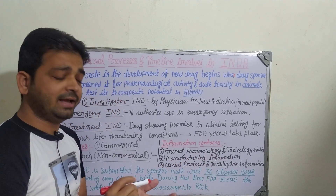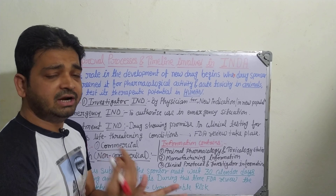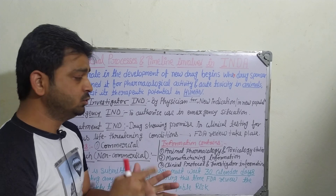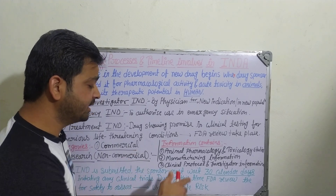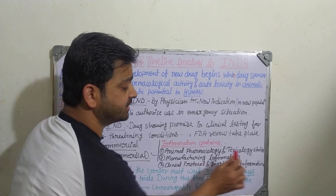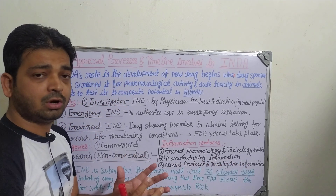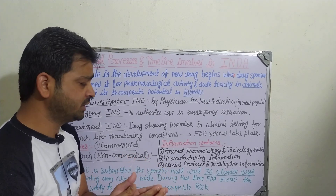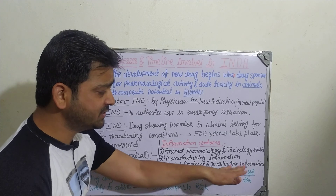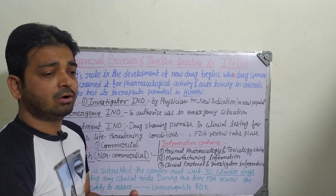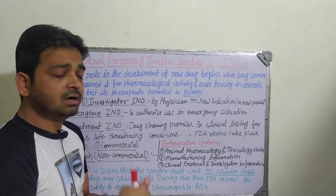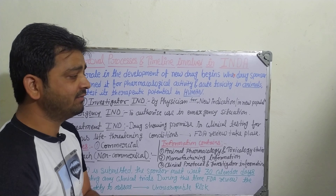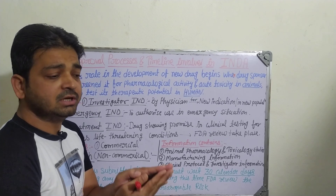Manufacturing information is also required: what are the excipients, what are the binders, and whether it is a solid or liquid dosage form — what content is used along with the drug to manufacture it. The third requirement is clinical protocol and investigator information — what protocol will be followed in phase one, phase two, and phase three, including the human volunteers' details such as male, female, and age group, as well as investigators' qualifications and skills. All this must be compiled and submitted to the FDA.